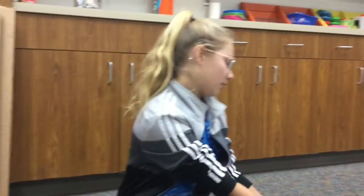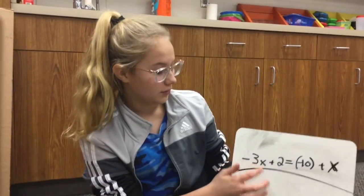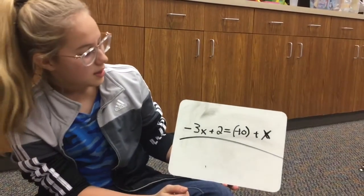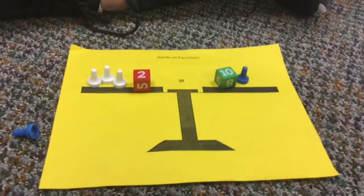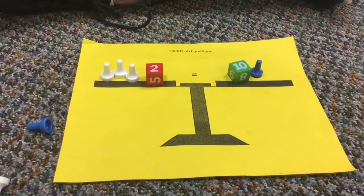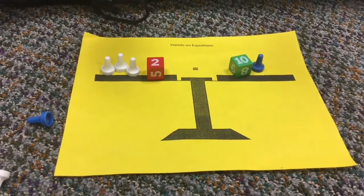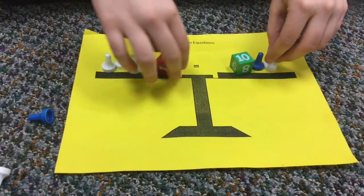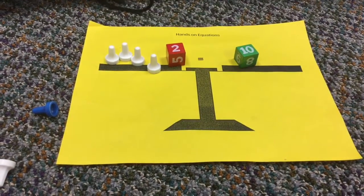Okay, so our next problem is negative 3x plus 2 equals negative 10 plus x. So down here we have all the pawns, we have it all set up. So first we have to make a legal move. So one of the legal moves we can make is we can add a white pawn to each side. Now this is a pair of zeros, so we can get that out of here.